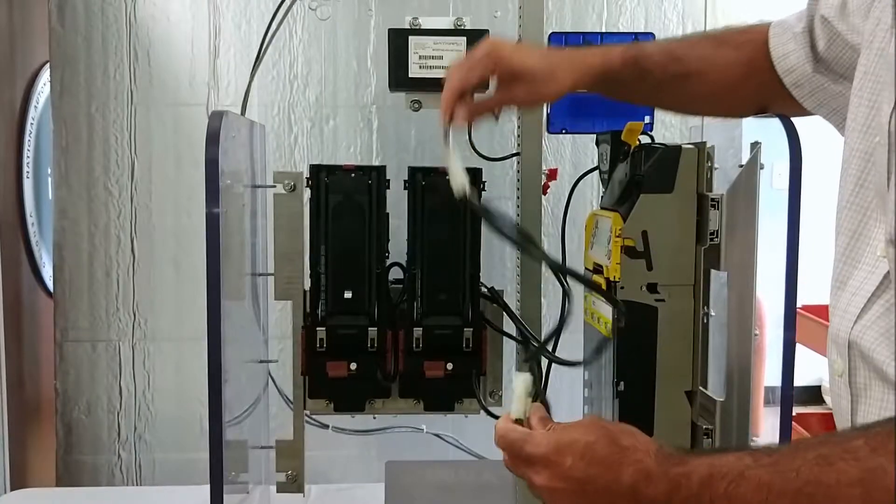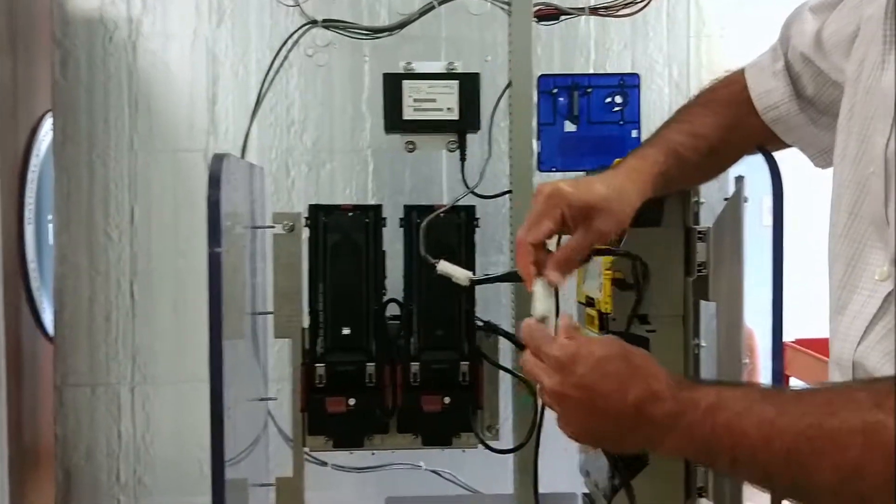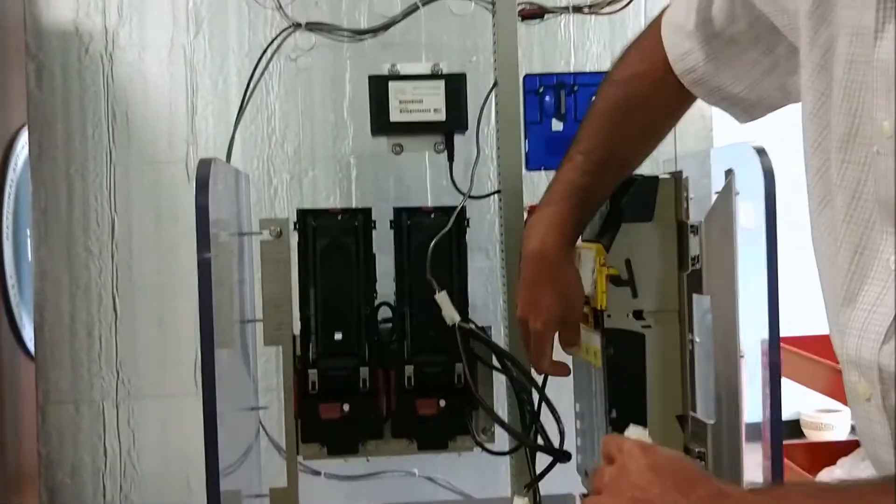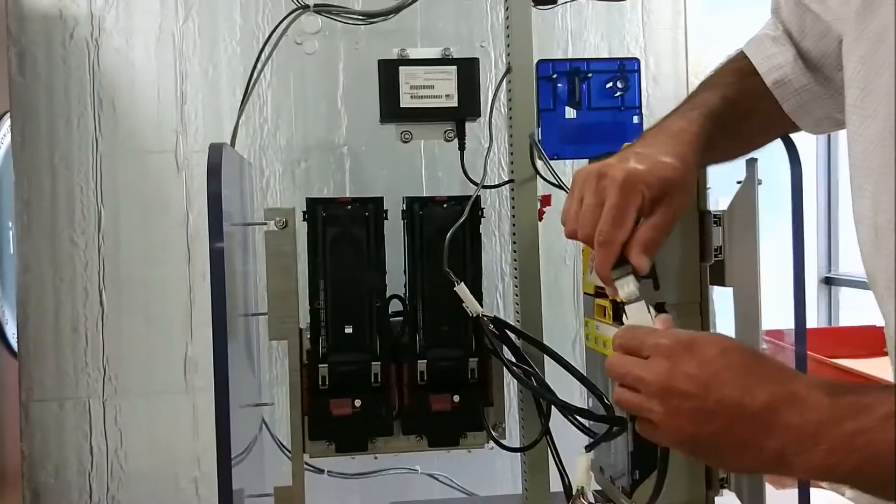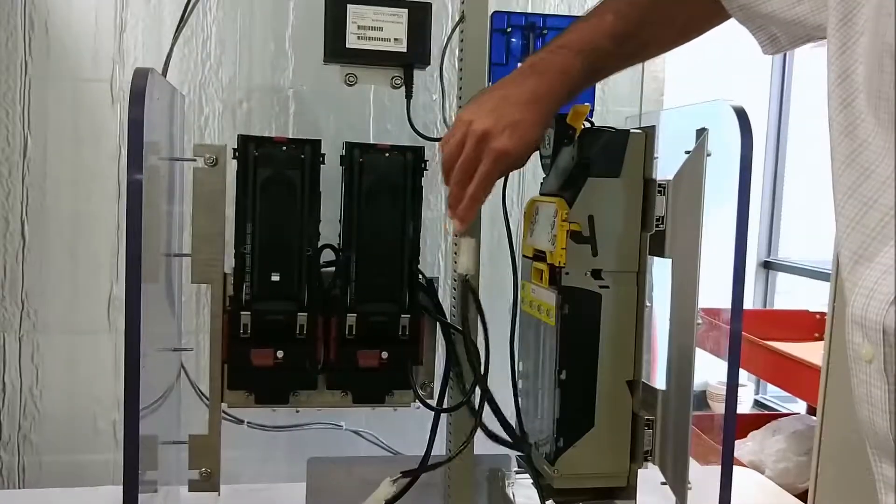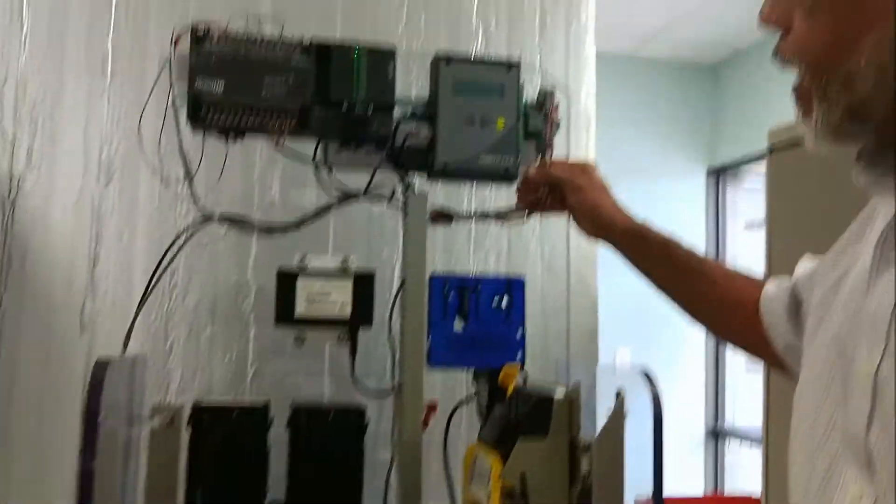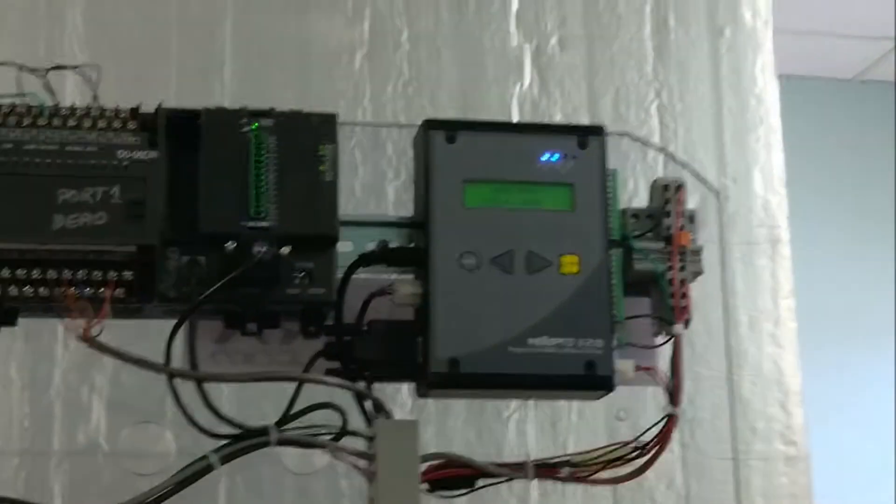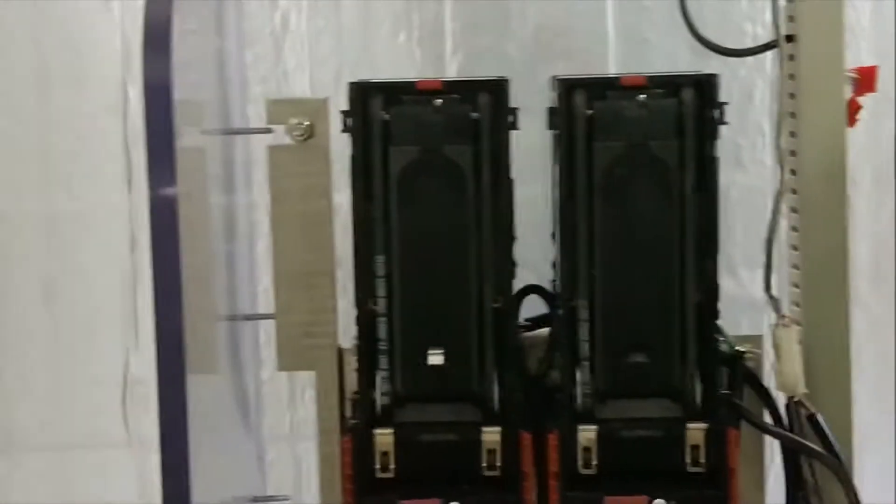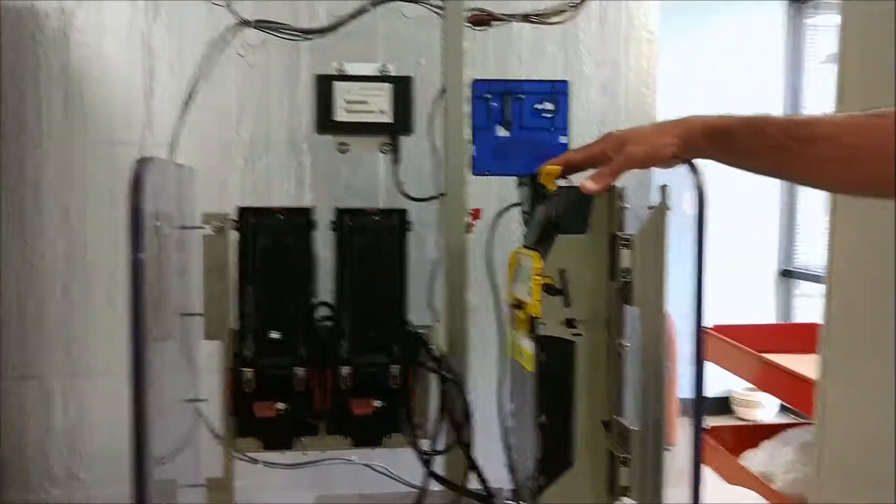I connected MDB Pro to the first bill acceptor. First bill acceptor goes to second bill acceptor. Again, you can go the other way around. It's not important. And then, finally, we end at the coin changer. Everything is now connected. Power everything back up. Now we have two bill acceptors on. We have a coin changer that's active.